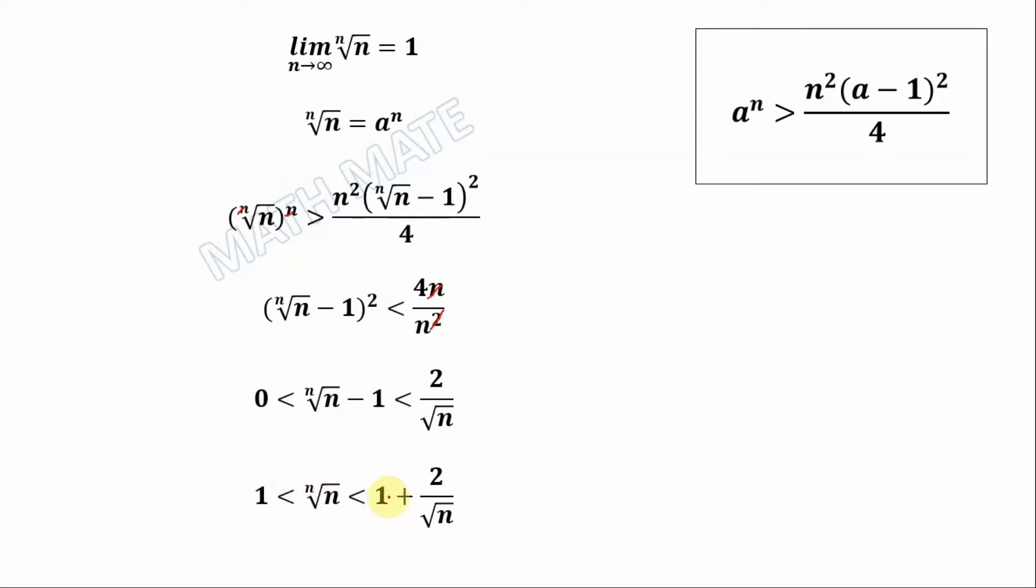And from the right hand side, when n goes to infinity, this fraction goes to 0. So our limit is 1, and it means from the left hand side and the right hand side goes to 1.